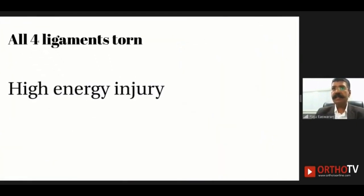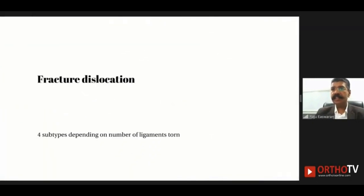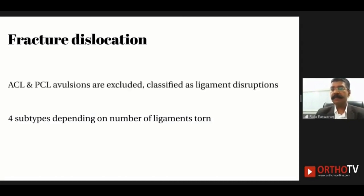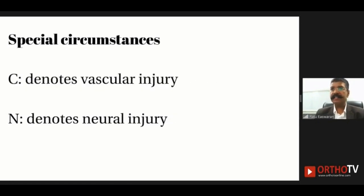Rarely, all four ligaments are torn as a consequence of a very high-energy injury. Fracture dislocations are classified similarly depending on the number of ligaments torn. ACL and PCL avulsions are excluded and classified as ligament disruption.